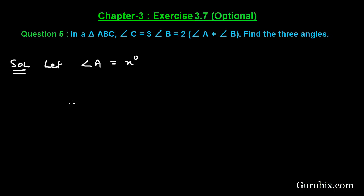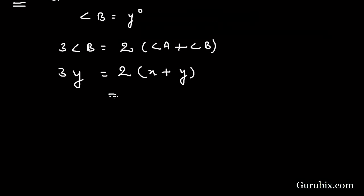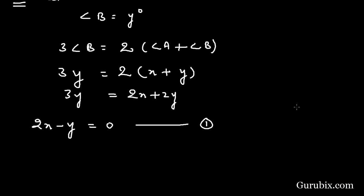Let angle A equal x degrees and angle B equal y degrees. We are given that 3 times angle B equals 2 times of angle A plus angle B, so 3y equals 2x plus 2y. This gives us 2x minus y equals 0, and this is our equation number one.